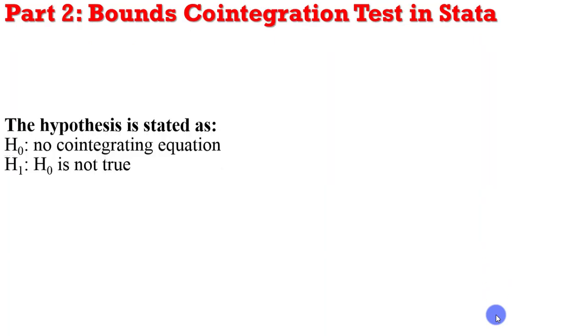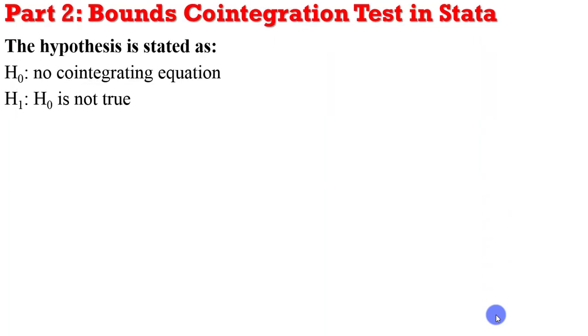So what is the null hypothesis of this test? The null hypothesis is that there is no cointegrating equation, while the alternative is that the null is not true.